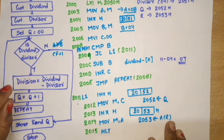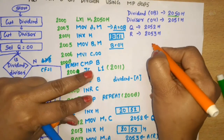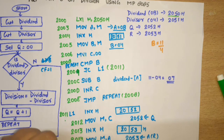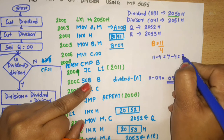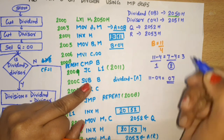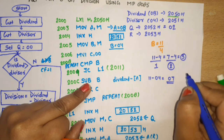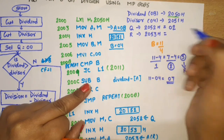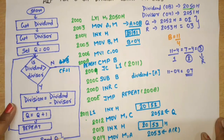When the program executes: 11 minus 4 equals 7 (first subtraction, Q=1); 7 minus 4 equals 3 (second subtraction, Q=2). Two subtractions, so the final quotient is 02, stored at 2052H. Since 3 is less than the divisor 4, no further subtraction is possible — 3 becomes the final remainder, stored at 2053H. This will be the result after execution of this program. Thank you.